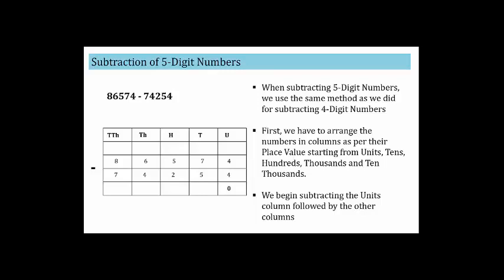Next, tens place: seven minus five equals two. Hundreds place: five minus two equals three. Thousands place: six minus four equals two. Ten-thousands place: eight minus seven equals one. Our final answer is 12,320.